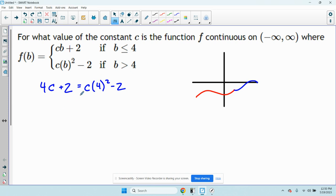Now it's just a matter of solving for c. So let me just simplify the right hand side. I have 4c plus 2 equals that's going to be 16c minus 2. I'm going to add 2 to this side. I'm going to subtract 4c from this side so I have 12c equals 4.